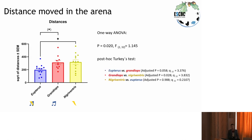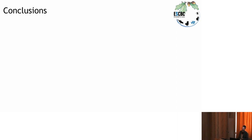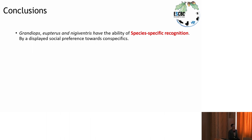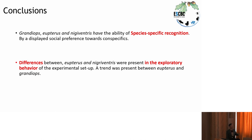We also measured the distance the three different species moved inside the arena to understand if they have a different exploratory approach to the apparatus. We found a significant difference in exploratory behavior between eupterus and nigriventris for the distance moved in the apparatus, and a trend of significant difference in exploratory behavior between eupterus and grandiosus. So let me summarize: grandiosus, eupterus and nigriventris all have the ability of species-specific recognition — they recognize their conspecifics, as shown by the social preference for conspecifics. But there were differences between eupterus and nigriventris, and a trend for a difference between eupterus and grandiosus, in exploratory behavior.